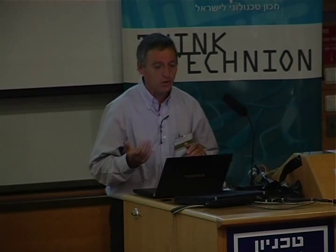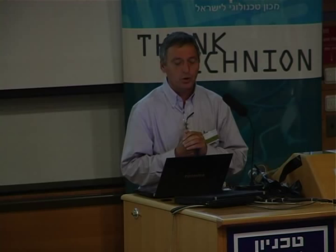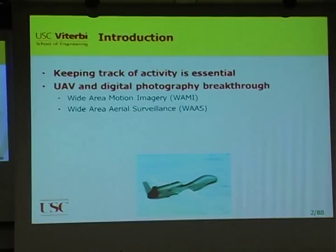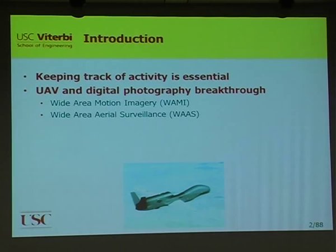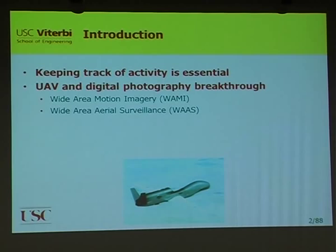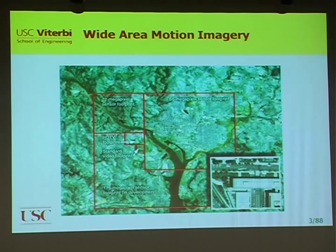So let's start with what it is. We want to keep track of activity, and there are two breakthroughs that occur. One is UAVs, and the other is digital photography. What you have now is airborne systems that are getting images, and it's called either WAAS — Wide Area Surveillance — or Wide Area Motion Imagery.